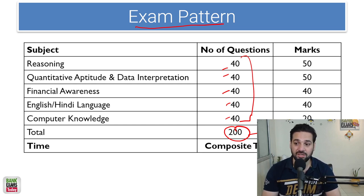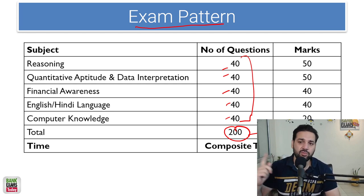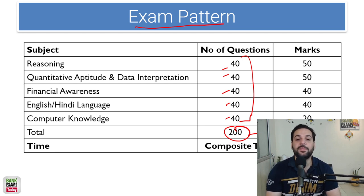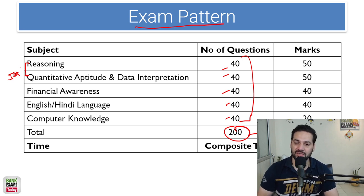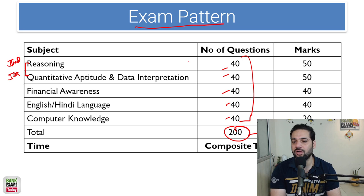Time is a constant students, time ka issue toh aapko rahega ki pehle kaunsa section karna hai baad mein kaunsa karna hai. If your quantitative aptitude section is strong, agar aapka reasoning or quant mein se, I hope aapka ek strong section hoga sabka hota hai in dono mein se. If quant is strong you should attempt the quant in the beginning, yeh starting meh aap attempt karayin quantitative aptitude and then may be reasoning.